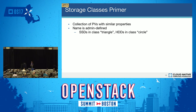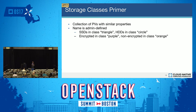It doesn't have to be about storage speed. I could also differentiate by other features like encryption — a storage class called 'purple' with encrypted storage and 'orange' with non-encrypted storage. The name and definition of what is contained in the storage class is completely up to the administrator to decide.